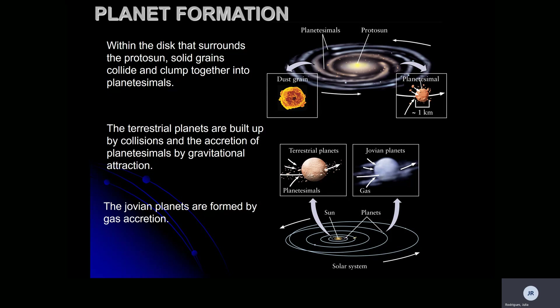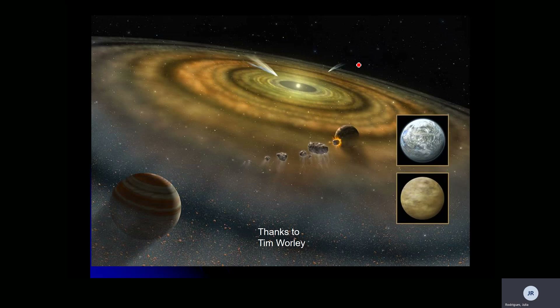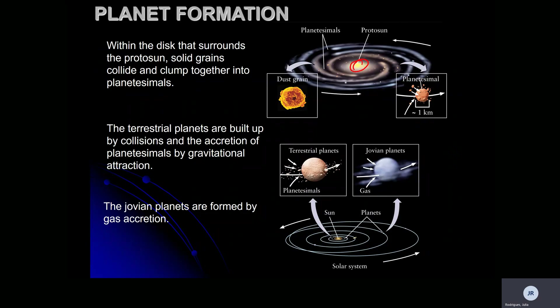When talking about planet formation, within the disk that surrounds the proto-sun, we have solid grains that collide and clump together to form planetesimals. Our terrestrial planets are built from collisions of those planetesimals, coming together by gravitational attraction. Jovian planets, on the other hand, are formed by gas accretion. Terrestrial planets are rocky planets, and Jovian planets are gas planets.